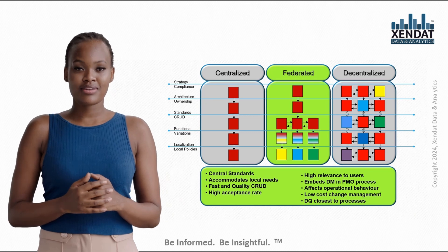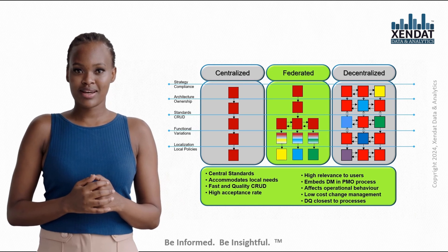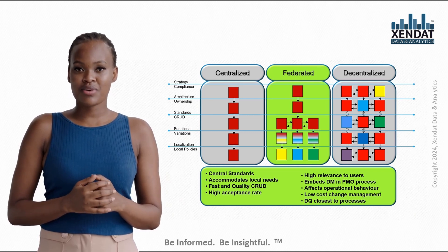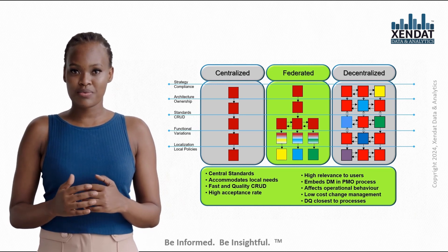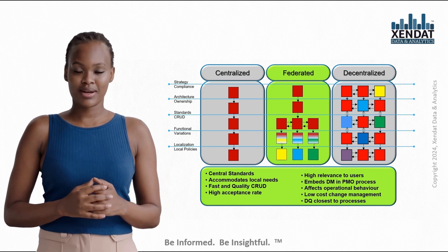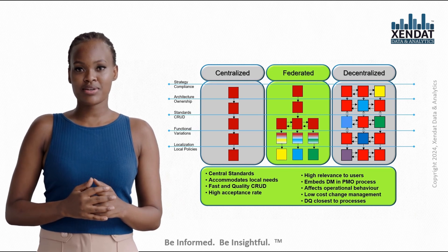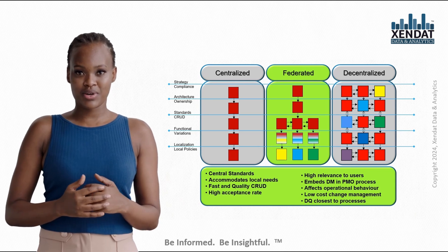Now let's look at the decentralized data governance model. This model is almost the opposite of centralized governance. Here, data governance principles are loosely defined at the corporate level, typically promoted by an IT organization, and then left to the various business functions to interpret and implement as needed. Imagine an organization spread across different regions or divisions, each with its own data needs, budget, and IT support. Decentralized governance works well in this setup because it allows each function to tailor their data governance processes to local challenges and priorities. This can lead to faster decision-making at the local level, but can result in a lack of alignment across the organization.